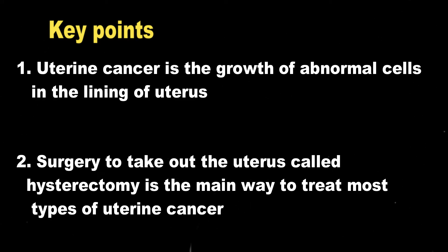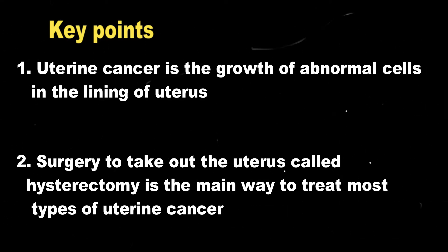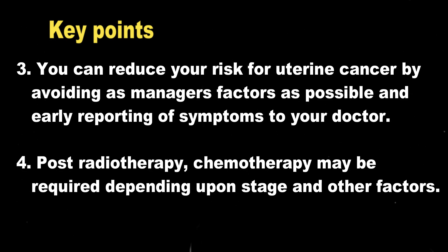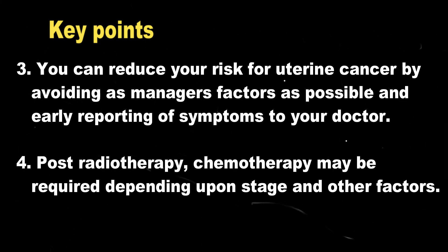Now, the key points of this topic: First, uterine cancer is the growth of abnormal cells in the lining of the uterus. Second, surgery is the main way to treat most types of uterine cancer. Third, you can reduce your risk by avoiding risk factors and early reporting of symptoms to your doctor. Fourth, post-operative radiotherapy and chemotherapy may be required depending upon the stage and other factors. I hope this video will be helpful for you. If you like this video, give it a thumbs up and do not forget to subscribe to my YouTube channel and press the bell icon to get notified. Thank you very much.